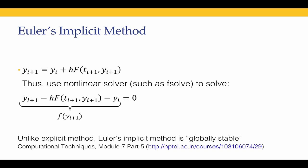The reason implicit methods are very useful is that they are globally stable. This was covered in the Computational Techniques course, module 7 part 5. Basically, when increasing the step size for computational speed, there is a threshold h beyond which Euler's explicit method becomes unstable. Euler's implicit method, on the other hand, is globally stable — you can choose any value of h and the solution remains stable, which is why implicit methods are popular for tough ODE problems.